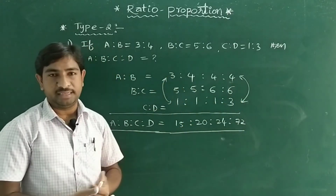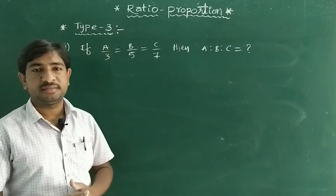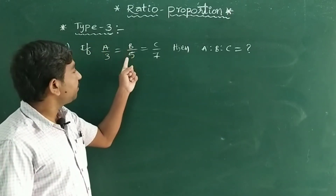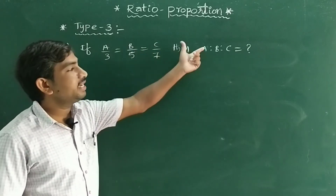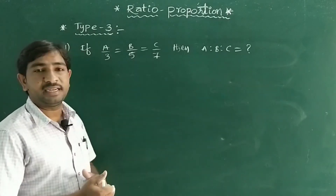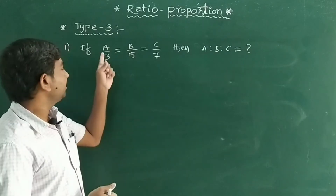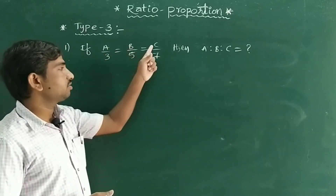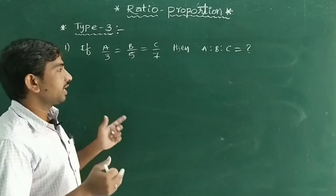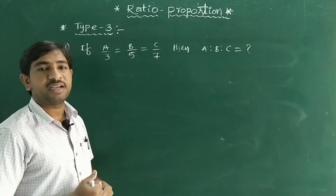Now see Type 3 problems. If A/3 = B/5 = C/7, then A:B:C equals what? These types of questions appear in various exams. The answer is very direct: A:B:C = 3:5:7 only.